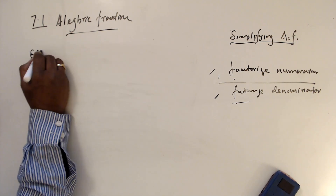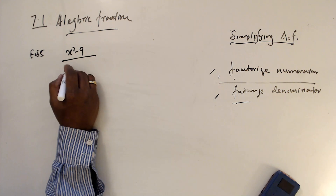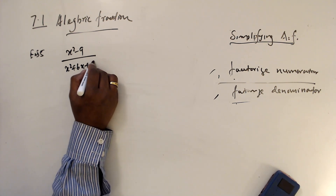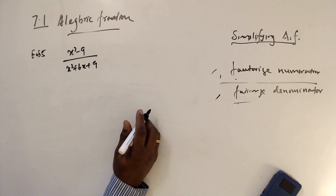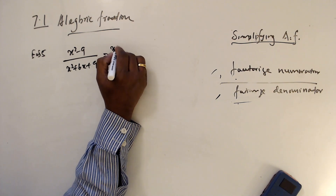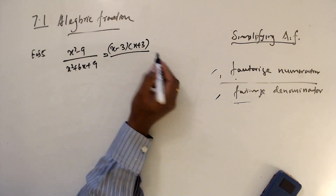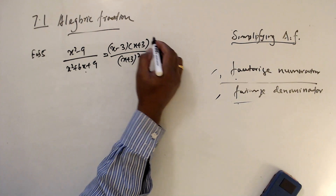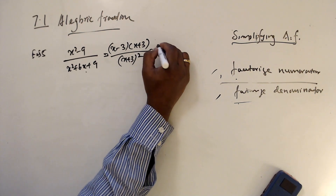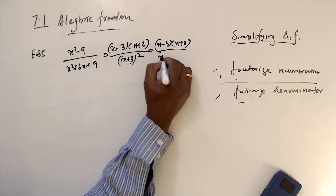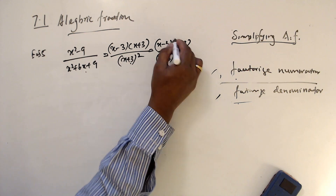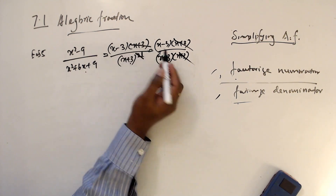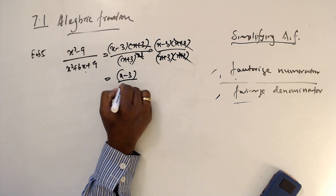Example 5: (x² − 9) over (x² + 6x + 9). The numerator factors as (x − 3)(x + 3). The denominator (x² + 6x + 9) factors as (x + 3)². Cancel one (x + 3) from numerator and denominator — you can cancel out, making it 1 — leaving (x − 3) over (x + 3).